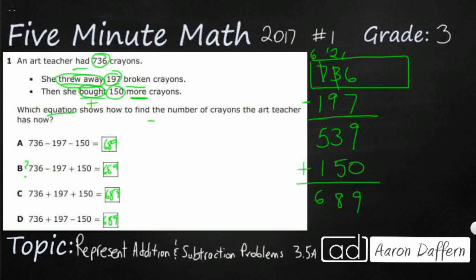So on A, we've got 736. We're going to subtract the 197. We already did that, that's going to be 539, but look what they did. They subtracted second. Well, when you buy more crayons, you're not going to subtract, you're actually going to add. So this is going to give us a number that's much too small. It's only going to give us 389. So we went in the wrong direction. So that is incorrect.